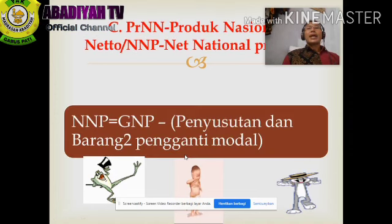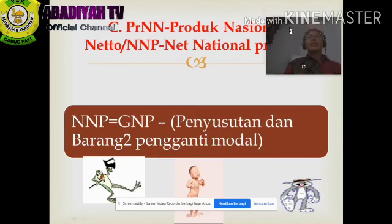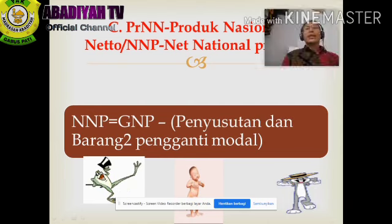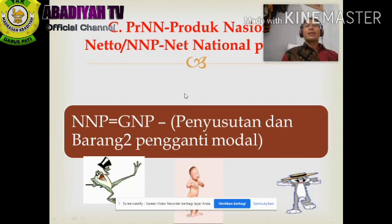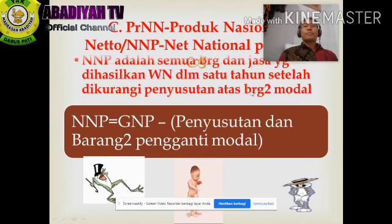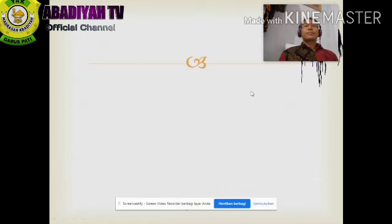Selanjutnya, PNN atau Produk Nasional Neto, bahasa Inggrisnya NNP, Net National Product. Rumusnya: NNP = GNP dikurangi penyusutan dan barang-barang pengganti modal.